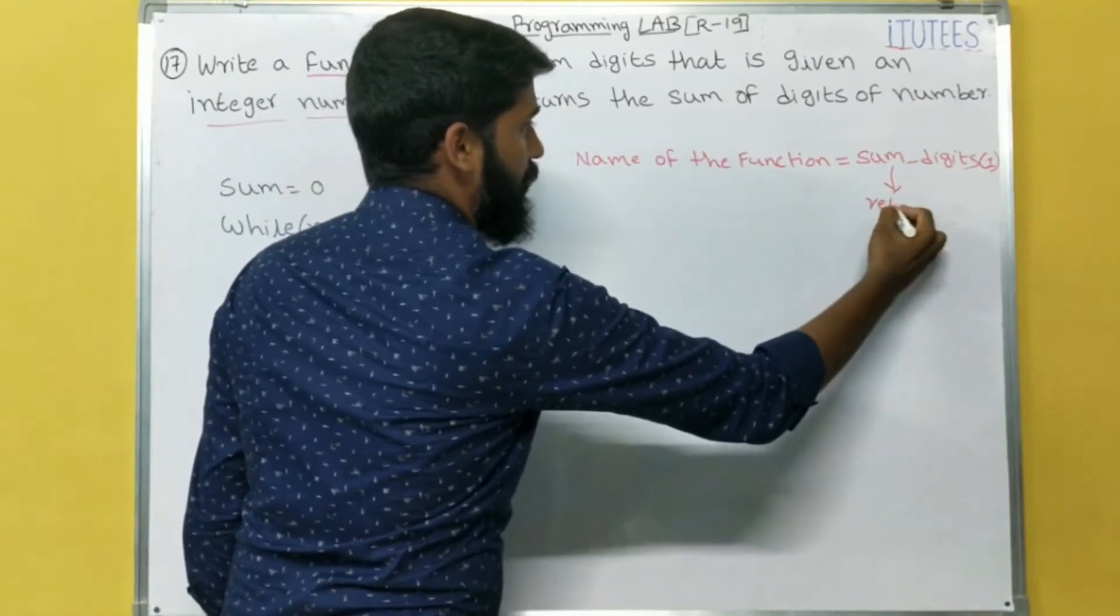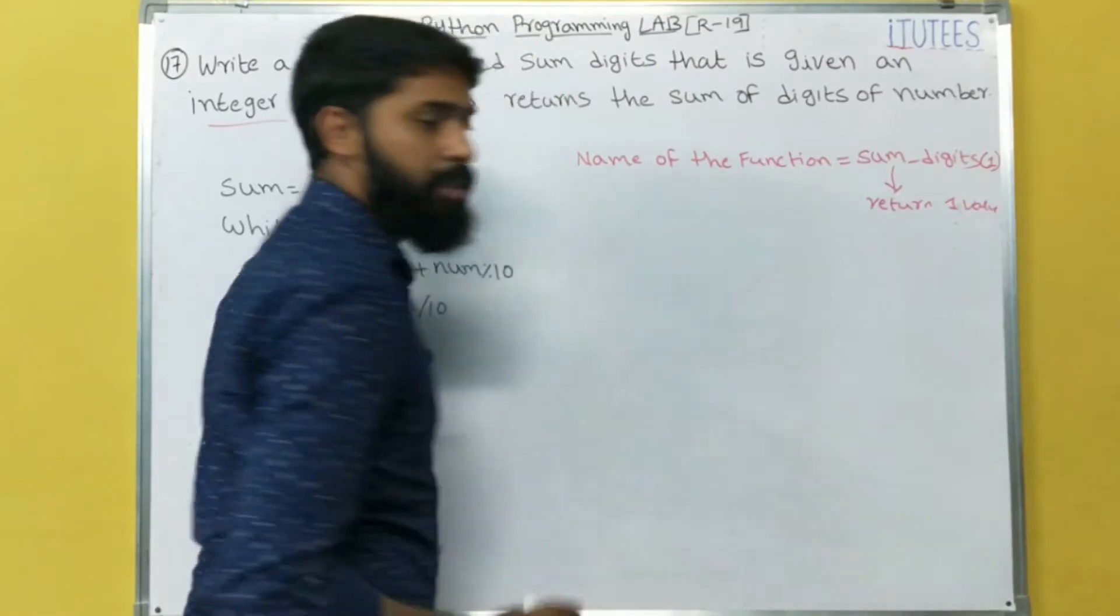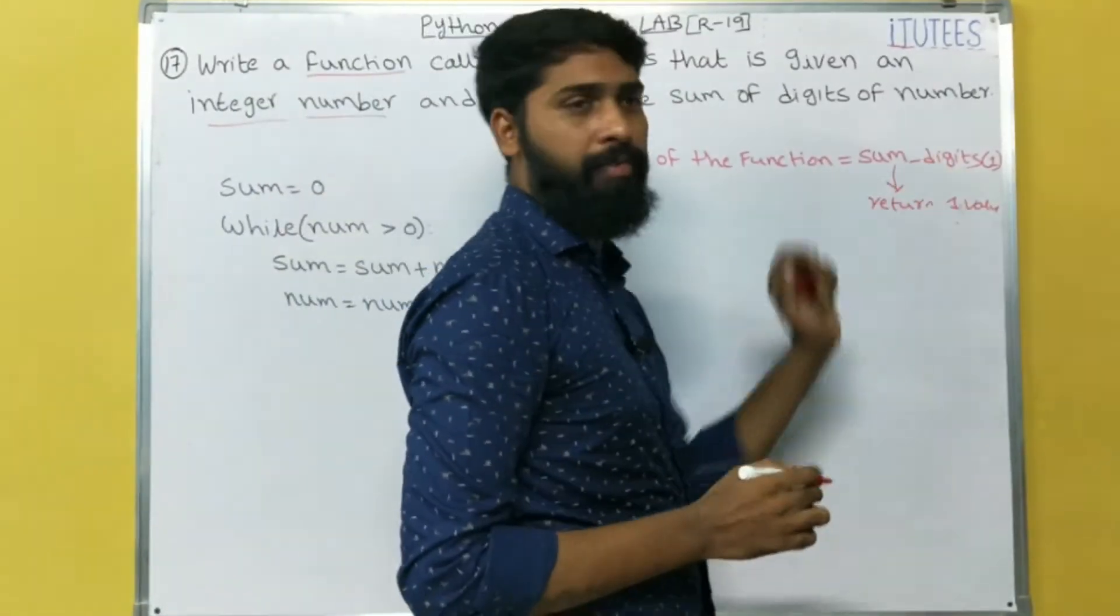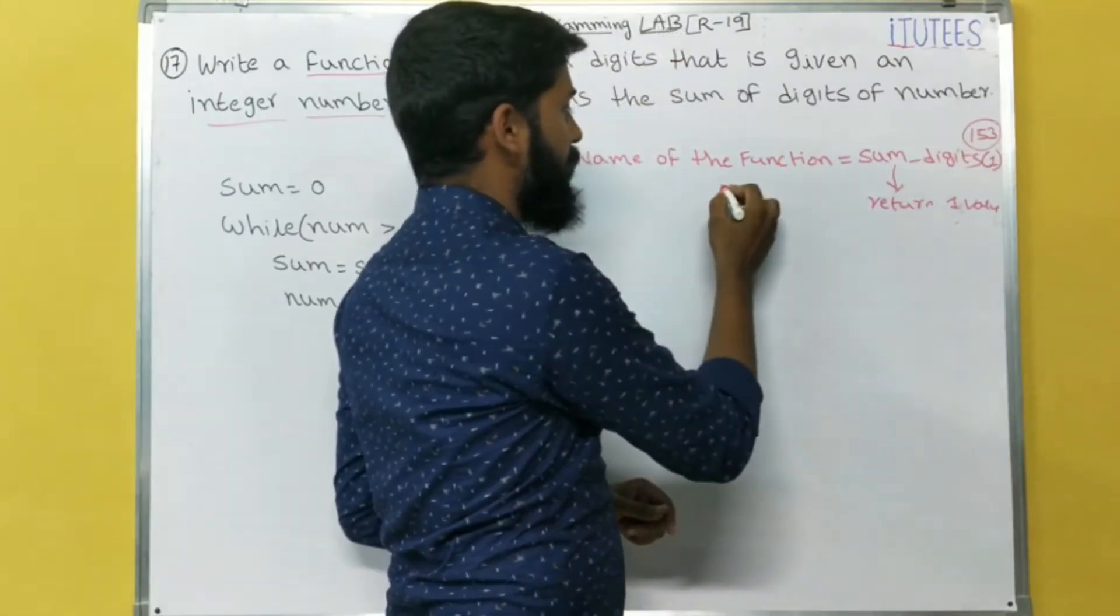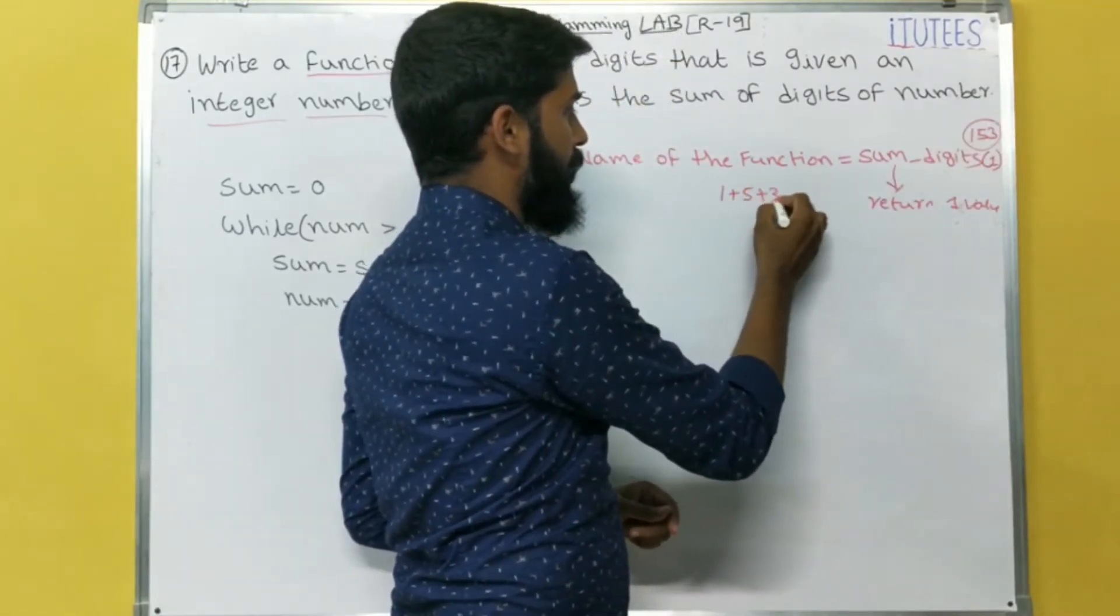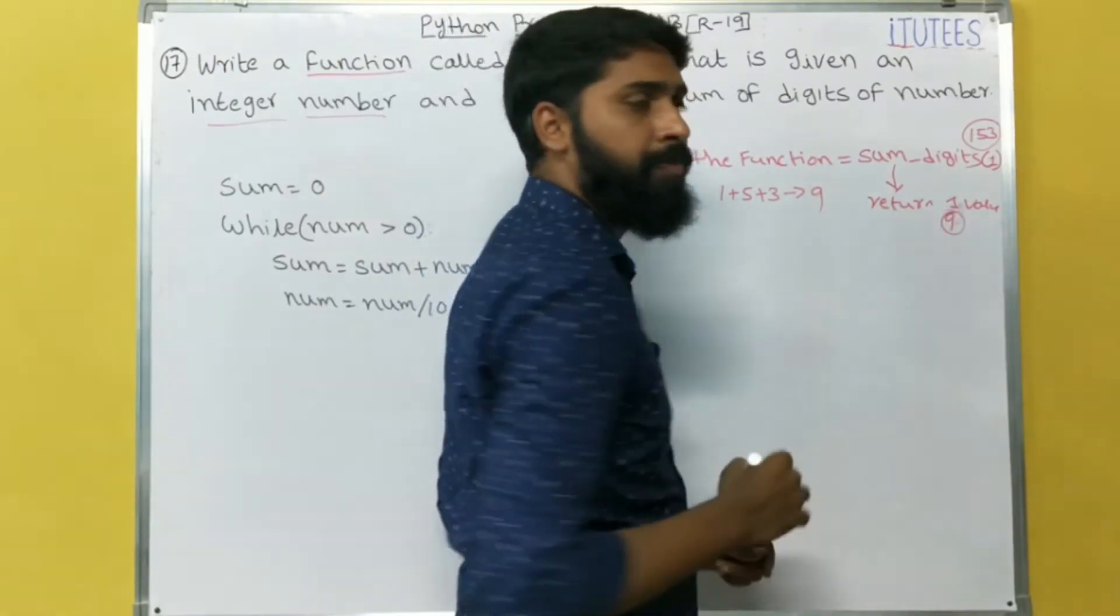So that means, this function returns one value. That means, if I enter sum_digits 153, this is the number. So what are the digits? 1 plus 5 plus 3, 9. So 9 is returned here.